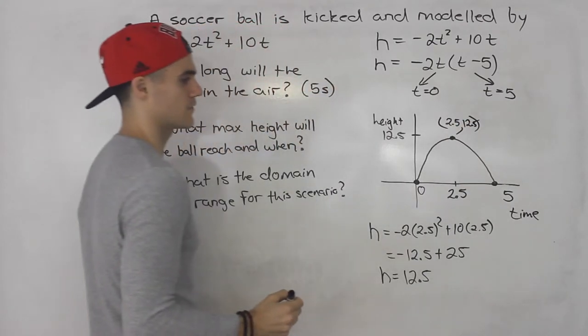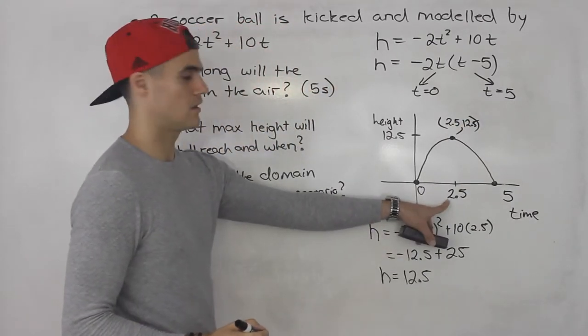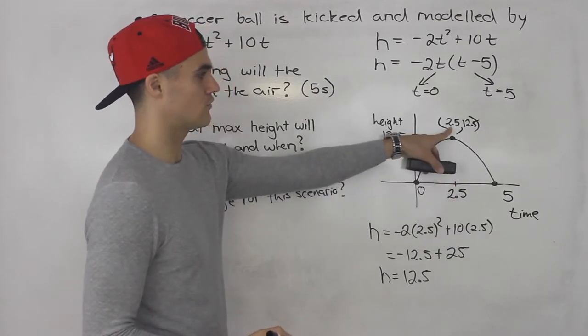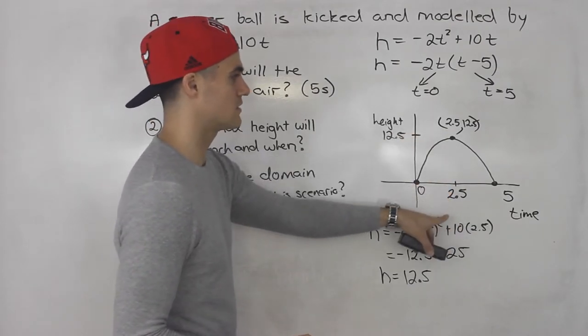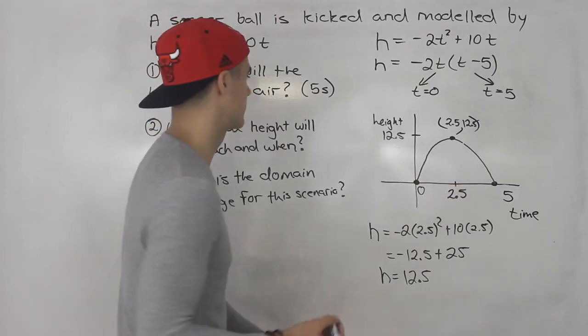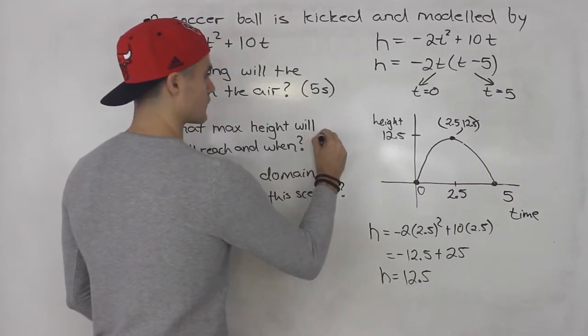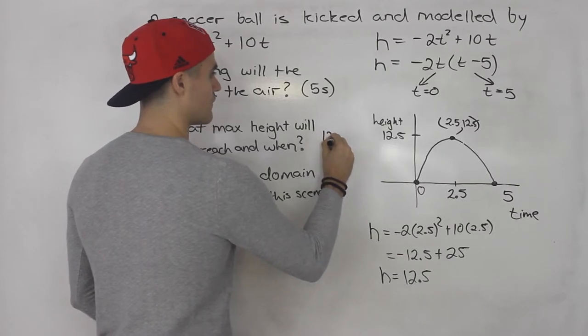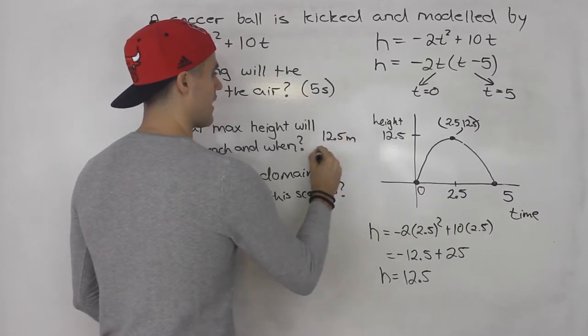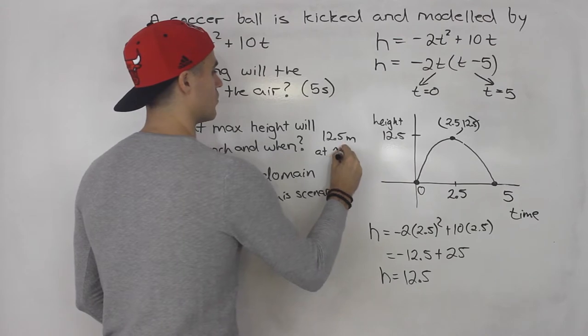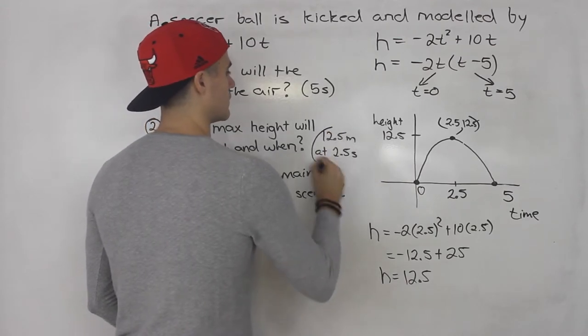So that is here. That's the vertex right there. So we easily found the independent variable for the vertex, and then we could plug that into the equation to get the dependent variable to get the height. So what max height will the ball reach and when? The answer for this is 12.5 meters at 2.5 seconds.